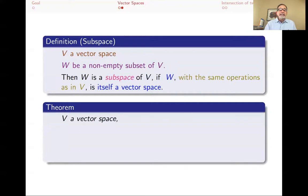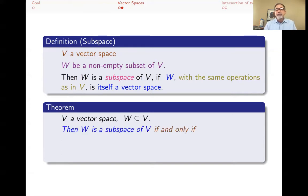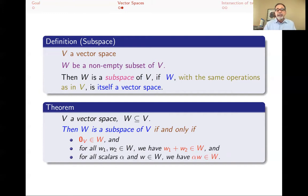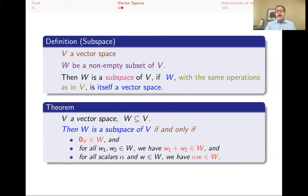We had a theorem — and we're not thinking about the particulars yet, but we have a theorem that says what you have to check to verify something is a subspace. If V is a vector space and you have a subset of it and want to prove it's a subspace, all you have to do is prove: the zero vector of V is in W; W is closed under addition, meaning if you take two arbitrary elements of W and add them you stay in W; and W is closed under scalar multiplication, meaning any scalar times any element of W stays in W.